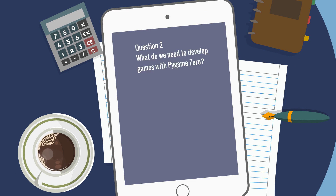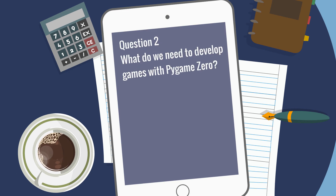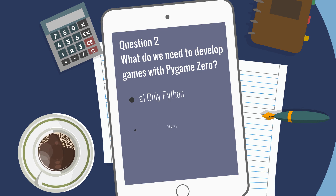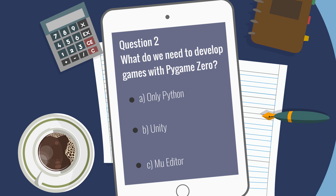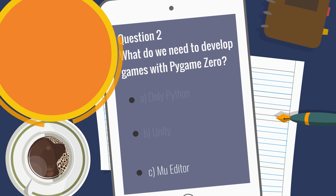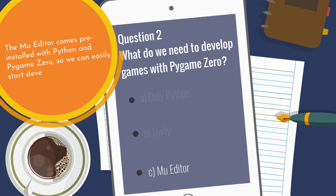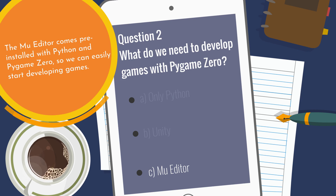Question 2: What do we need to develop games with PyGame Zero? A. Only Python. B. Unity. C. Mu Editor. The answer is C. The Mu Editor comes pre-installed with Python and PyGame Zero so we can easily start developing games.